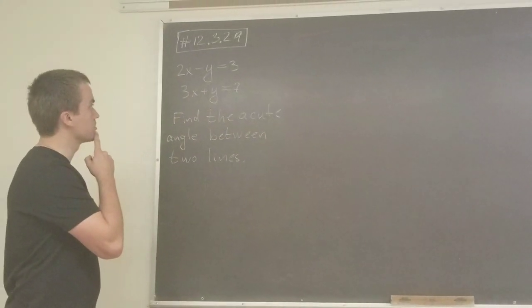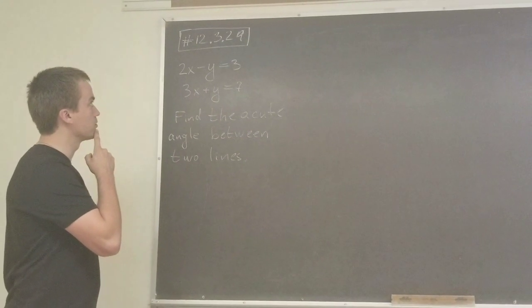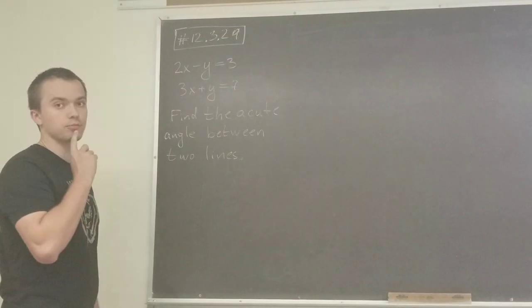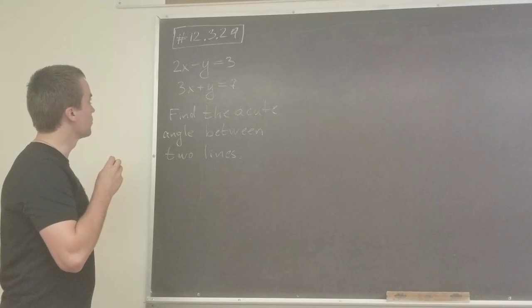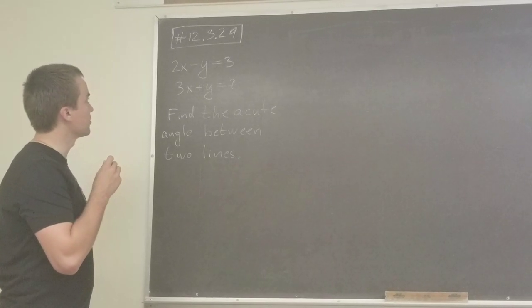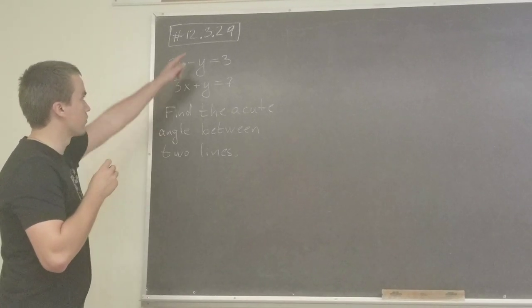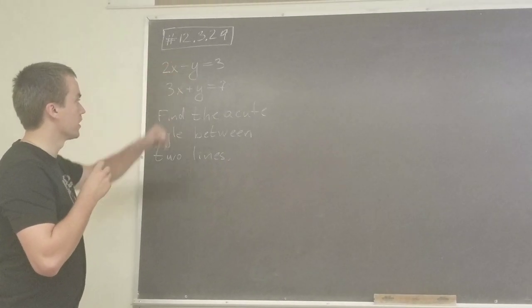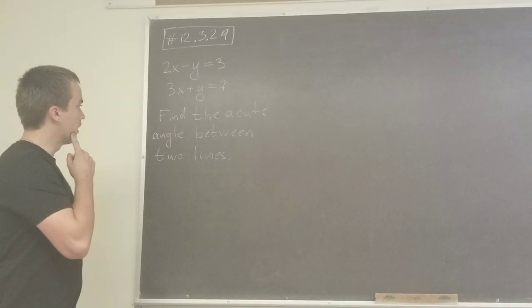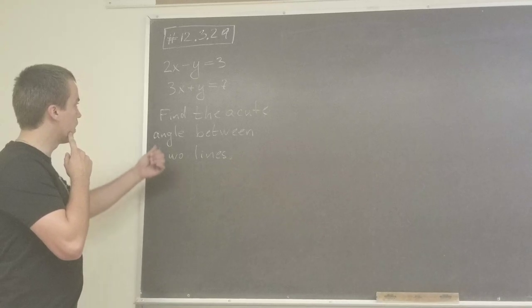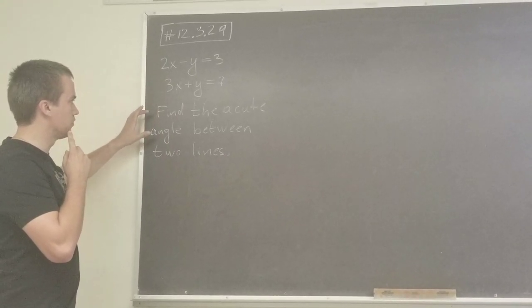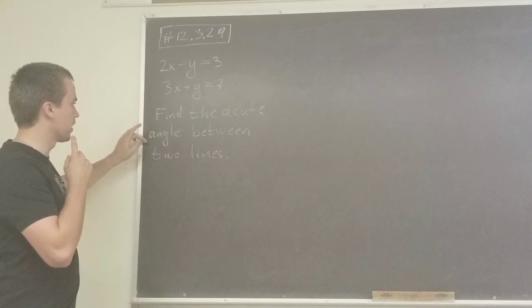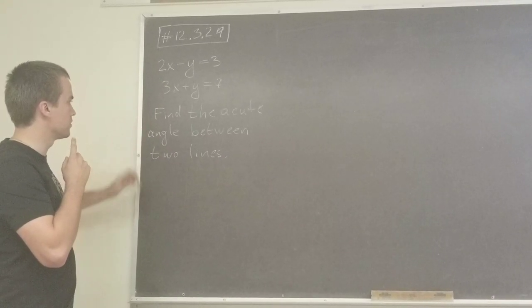Hello guys. I want to solve this problem from Stewart's Multivariable Calculus, problem number 12.3.29. We're given two lines and we want to find the acute angle between these two lines.